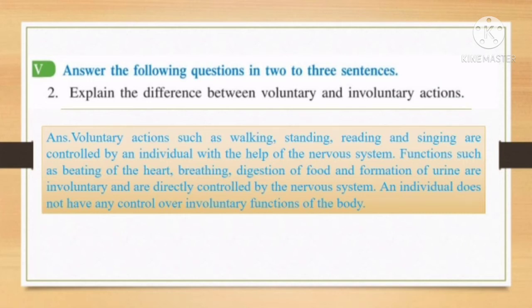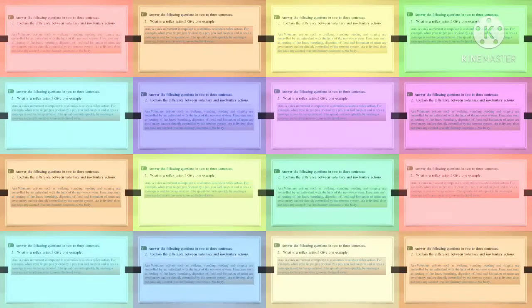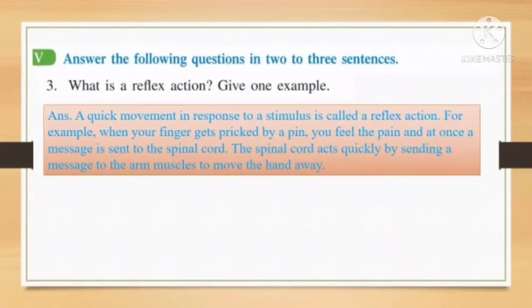I hope class you have understood this question. Now let's start the third one. Question number three: What is a reflex action? Give one example. A quick movement in response to a stimulus is called a reflex action. For example, when your finger gets bit by a pin, you feel the pin and at once a message is sent to the spinal cord. The spinal cord acts quickly by sending a message to the arm muscle to move the hand away. And this is how a reflex action takes place.